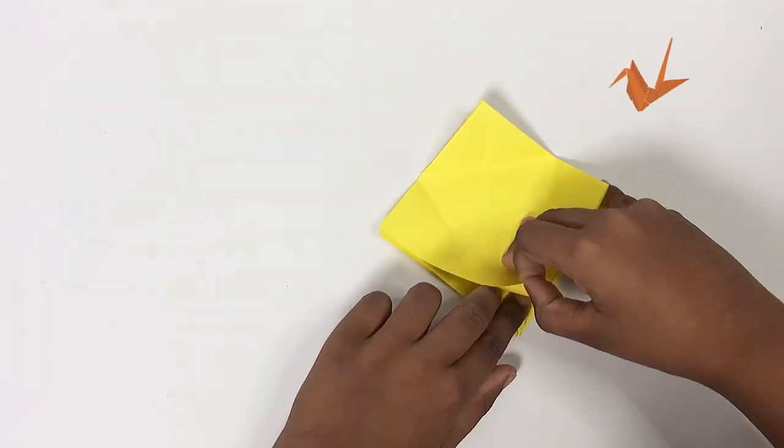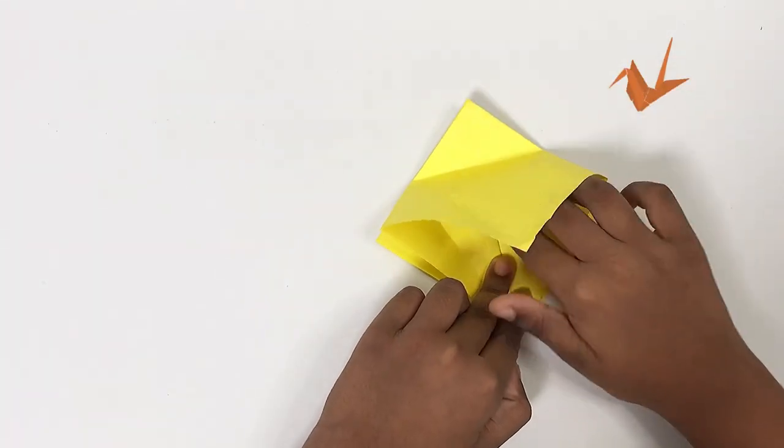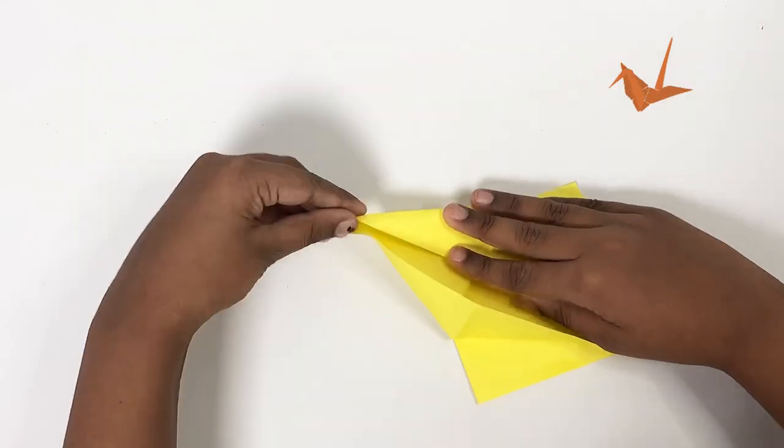So, now flip it around and then take this. Don't open it all the way to where the triangle is. Just open it till the beginning of the triangle.